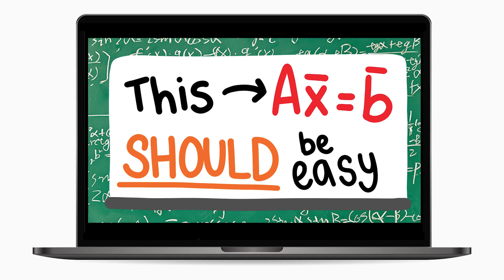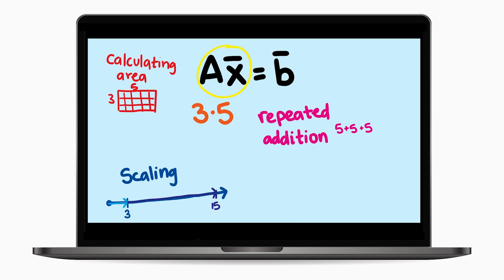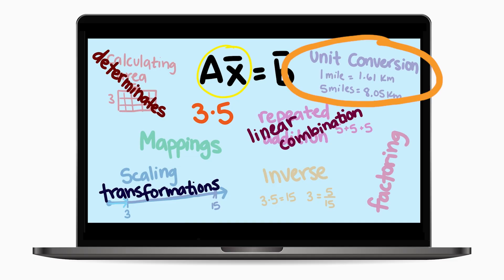In previous videos, we discussed how most of a linear algebra class is just trying to understand this seemingly simple equation. The reason why it takes so much time in linear algebra to understand this equation is because of all the ways we use multiplication in mathematics and in the real world. Today's video extends the idea of unit conversions to vectors and multidimensional spaces.